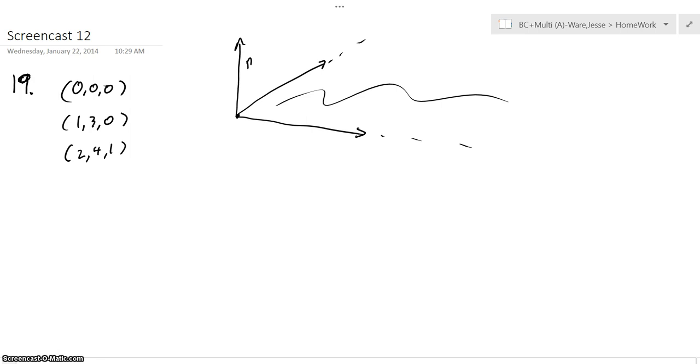So what we're going to want to do is find vectors using the points and then using two vectors to cross product to find the normal vector here.